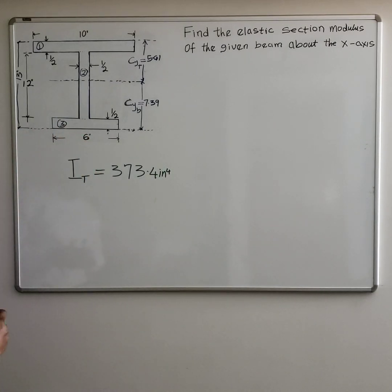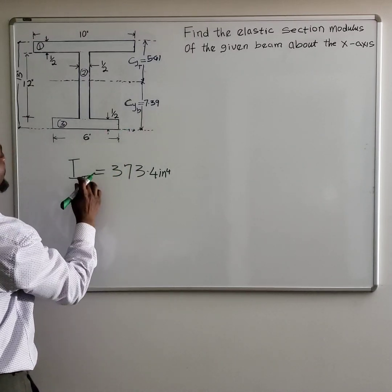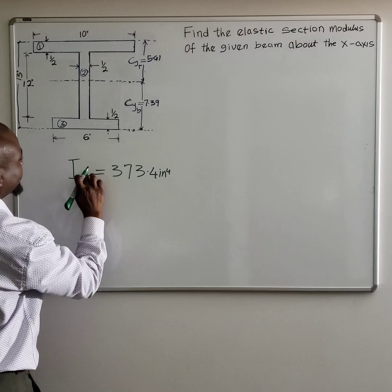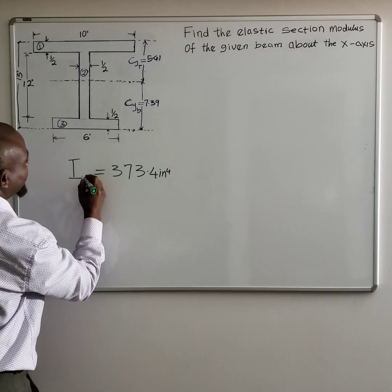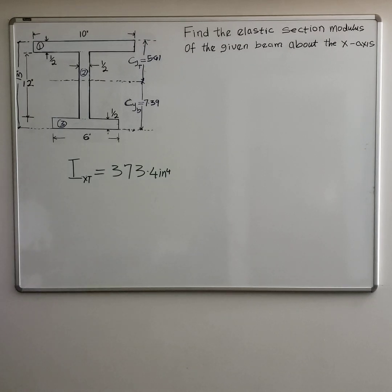So with those two values - the centroid along the y-axis and the total moment of inertia about the x-axis - with these two values you are able to solve for the elastic section modulus. And in this particular beam, in this particular shape, you realize that the area of the top section about the centroid is not the same.